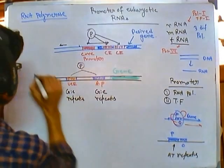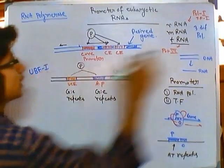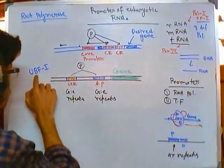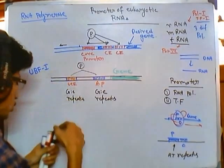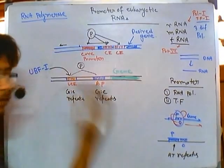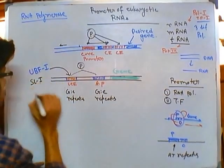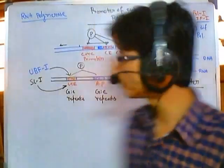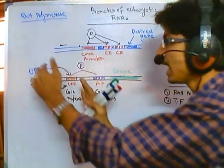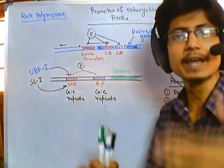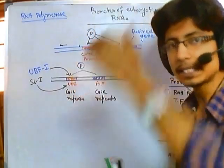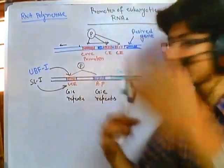The transcription factors used in this case include UBF1 — upstream binding factor 1. 'U' means upstream, 'B' means binding, 'F' means factor. UBF1 binds to the UCE region. Once it binds, it recruits another transcription factor called SL1, which then comes and binds in both the upstream control element and the actual promoter region.